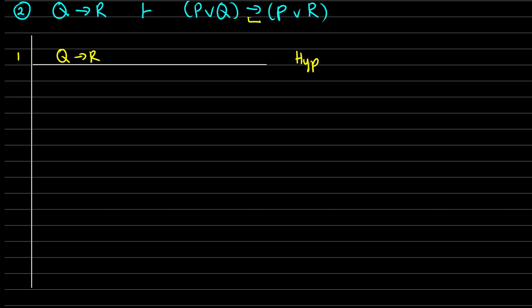So there's a conditional here, which means that I'm going to have to have a sub proof for CP, for a conditional proof. So I need to assume that I have P or Q, and I need to get P or R out of it. So this is a new hypothesis, and I'm just going to write for CP in brackets so that way we can keep track of things here.